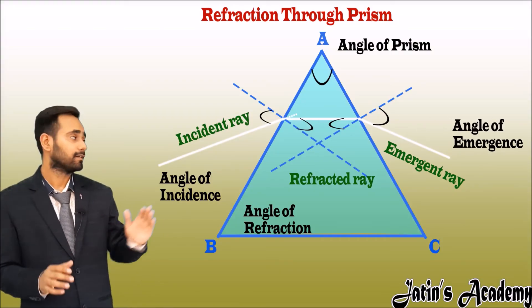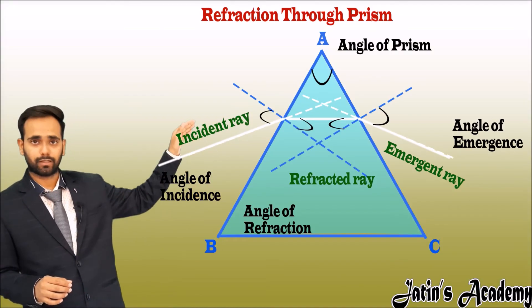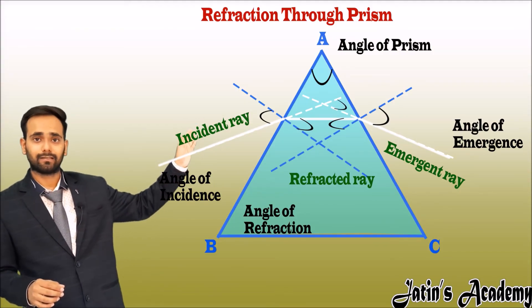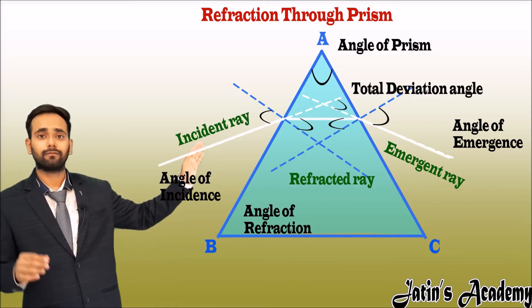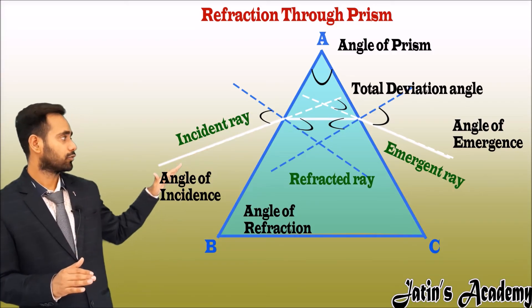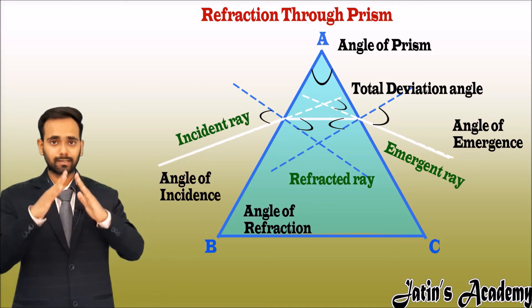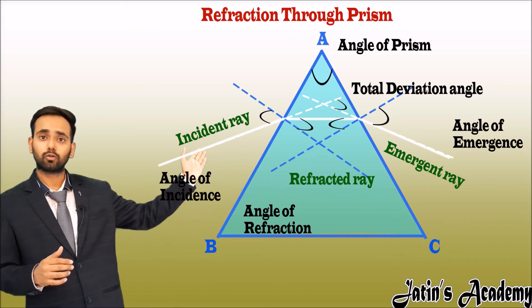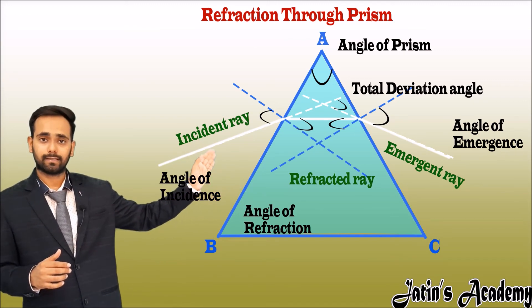Now extend the incident ray and the emergent ray. After extending, we get a deviation angle. This is a total deviation angle. What is the meaning of total deviation? It means the ray is going toward this side but due to this glass prism it is bending toward this side. So this is the total deviation of the incident ray.